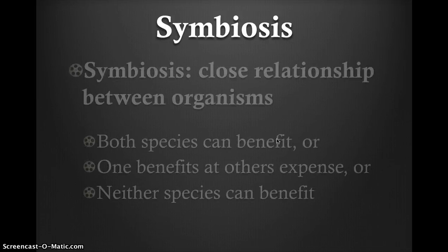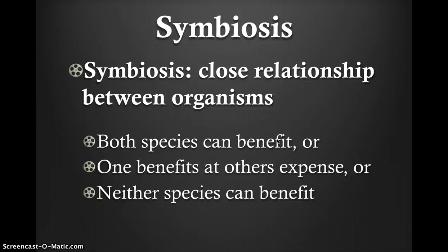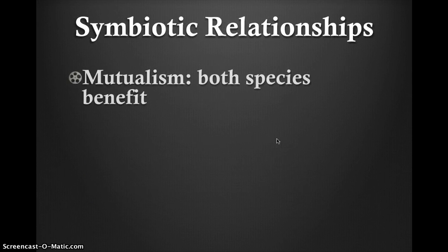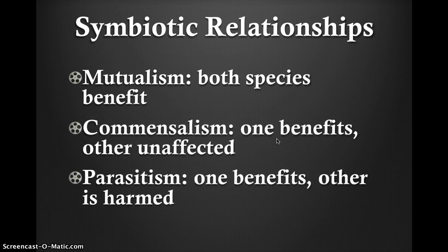Symbiosis is a close and often long-term interaction between different biological species. Several different types of relationships exist within symbiosis: one species can benefit while the other is harmed; one species can benefit while the other is unaffected; and both species can benefit. Commensalism is when one organism benefits but the other is neither harmed nor helped — for example, barnacles adhering to the skin of a whale. Mutualism is when both species benefit — for example, a bumblebee sucking nectar from a flower. Parasitism is when one organism benefits and the other is harmed — for example, fleas on a dog.